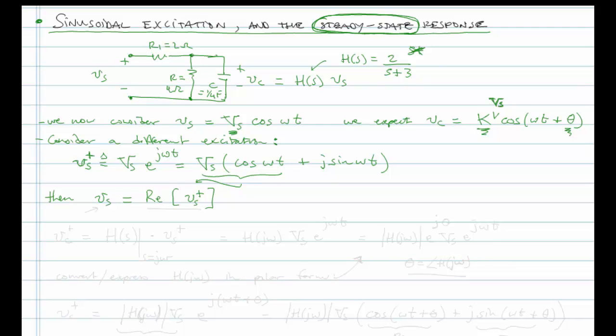If we can readily do analysis on a system that's excited by Vs plus, by this e to the j omega t excitation, then, keeping in mind that the actual excitation is just the real part of that, when we arrive at the response to our e to the j omega t excitation, we can simply pull off the real part of the response, and the real part of the response will correspond to the real part of the excitation. This is in keeping with this idea of superposition.